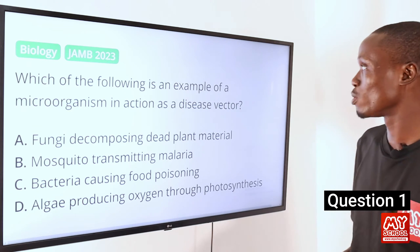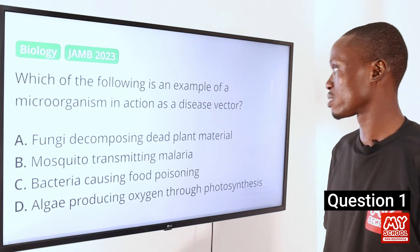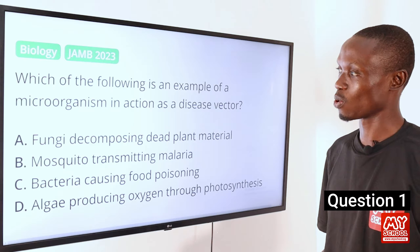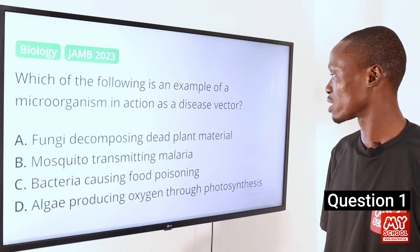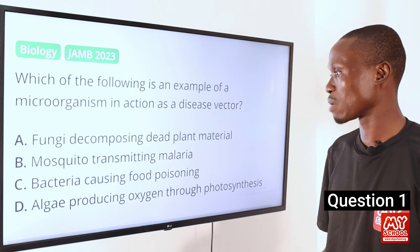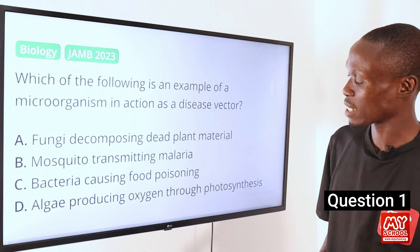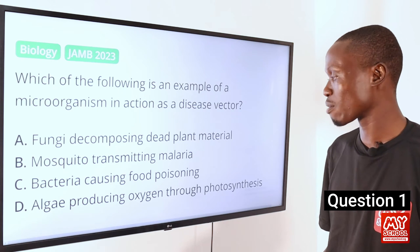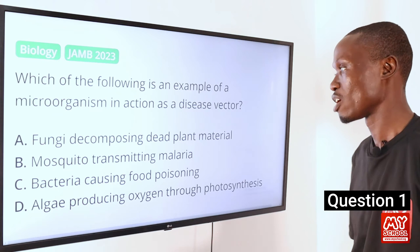Which of the following is an example of a microorganism in action as a disease vector? A, fungi decomposing dead plant material. B, mosquito transmitting malaria. C, bacteria causing food poisoning. And D, algae producing oxygen through photosynthesis.